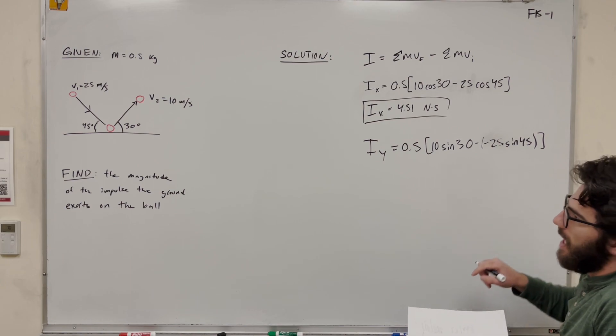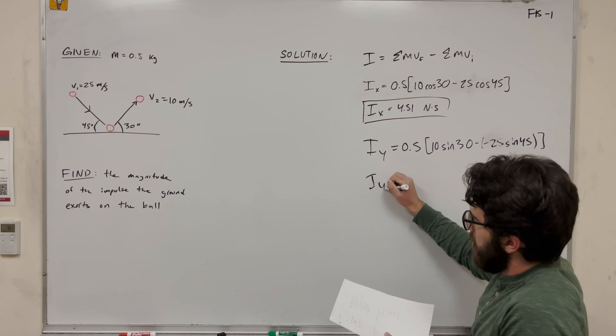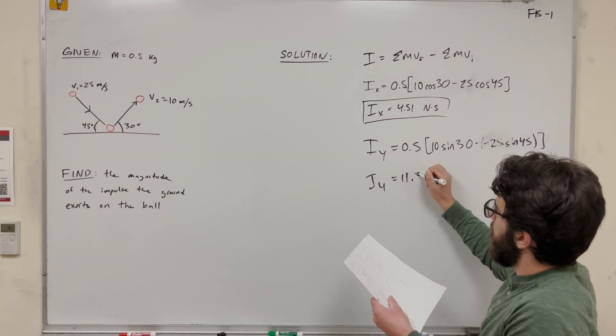So now these are basically going to be added together because the impulse is changing more than just a little bit. So you do this and I_y equals 11.3 newton-seconds.